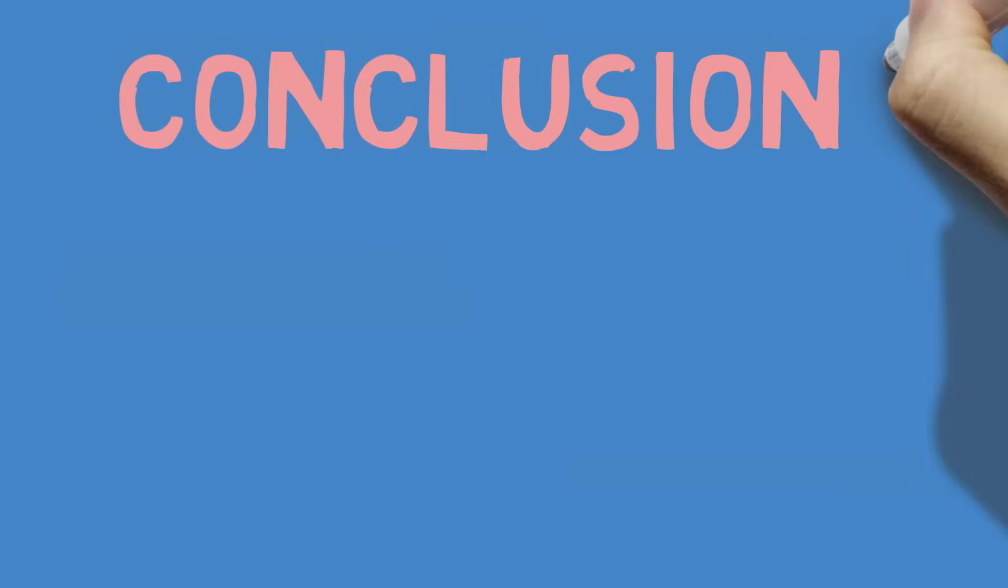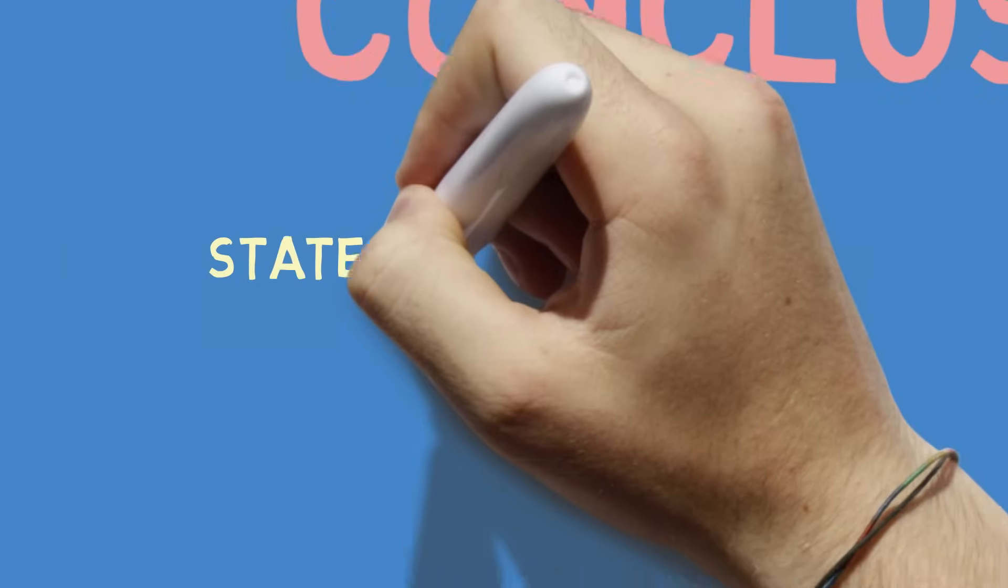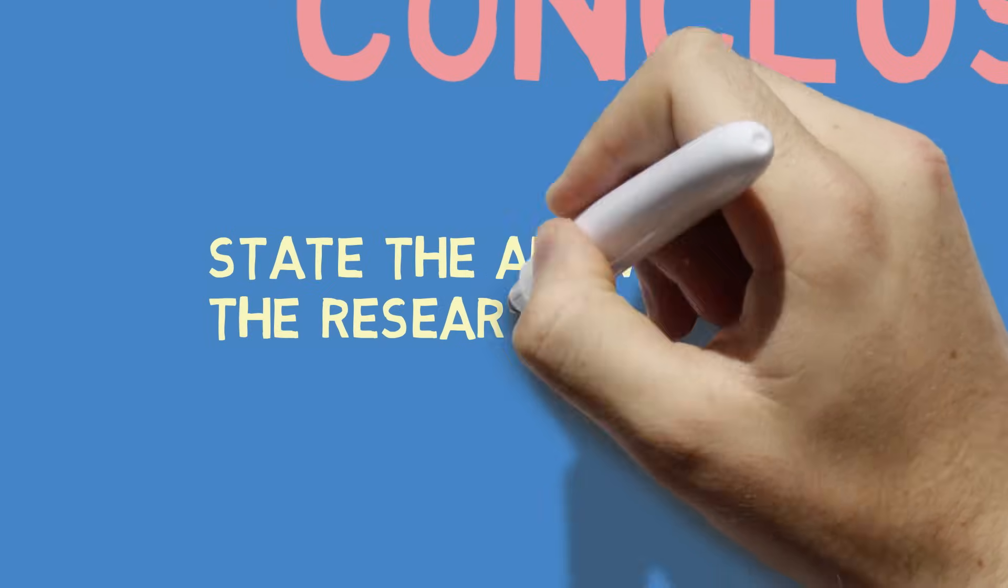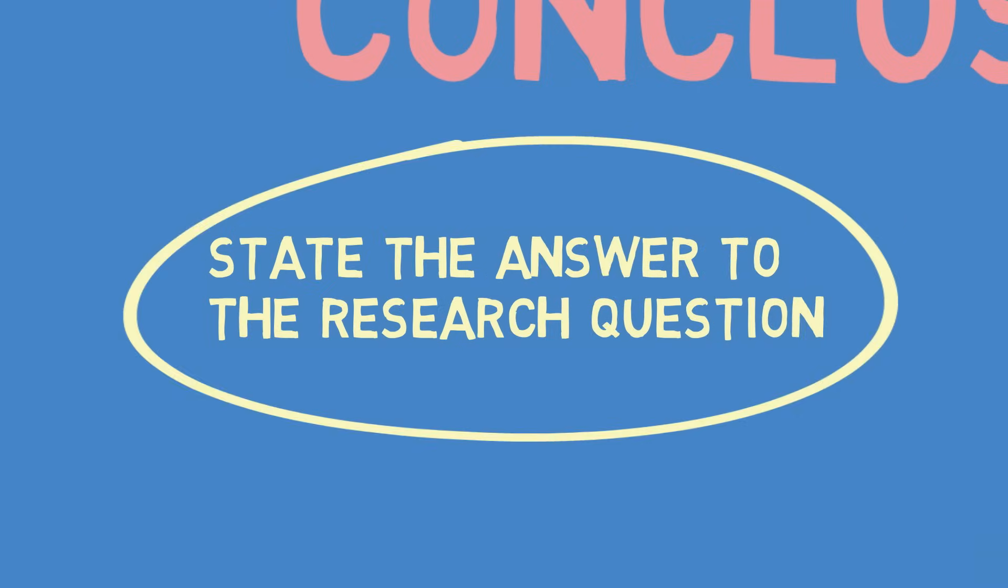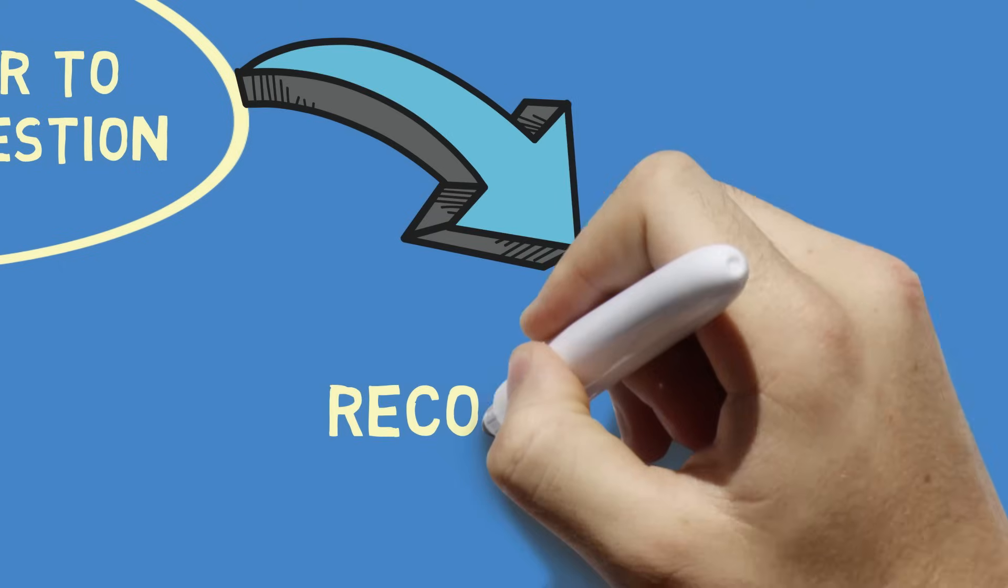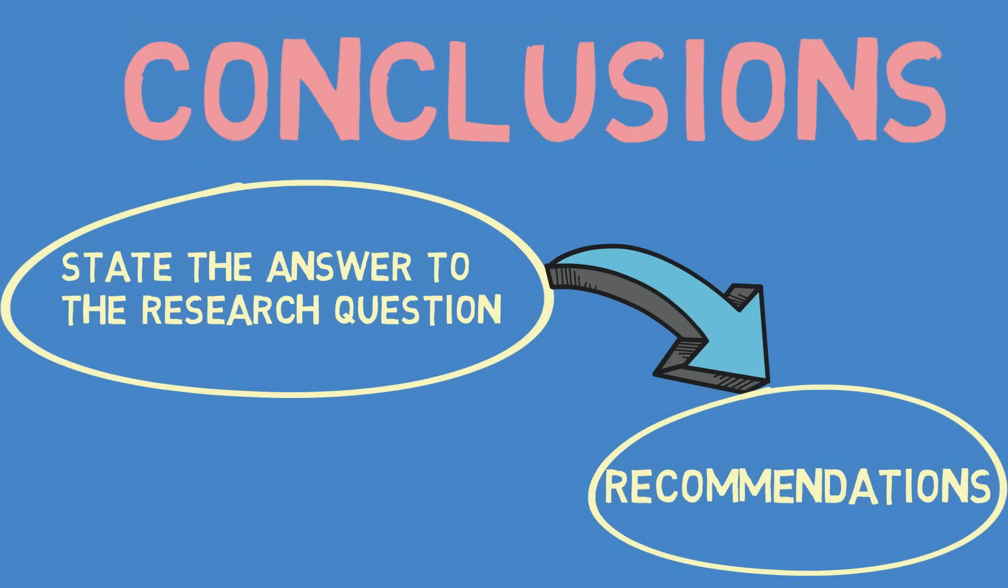And finally, there's the conclusion and recommendation section. This is where you get to tell the reader, so what? What is the point of all of this? You want to help the reader understand why your research matters. So you want to state the answer to the research question that you asked and state any recommendations that can be made as a result of your findings.